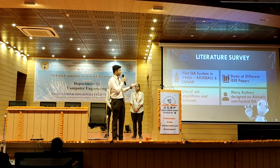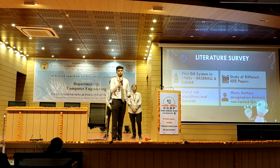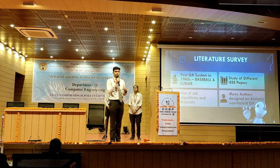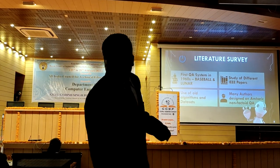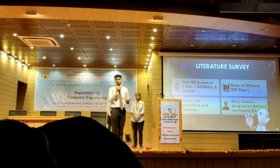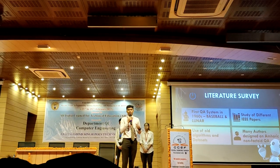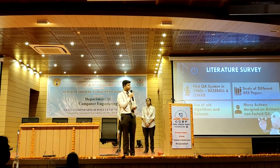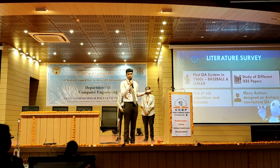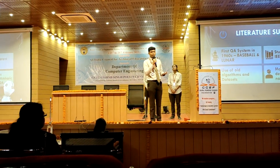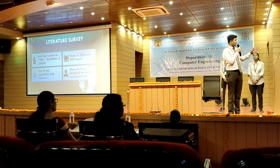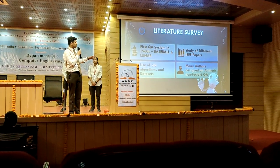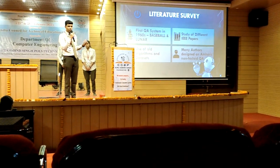Let me tell you about some early research in this field. The first QA system, Baseball, was developed in 1961 to answer questions related to baseball games played in the US — it was a closed domain QA. The second system, Lunar, was developed in 1971 to answer questions regarding the Apollo moon mission. Lunar helped geologists access, compare, and evaluate datasets of chemical analysis of lunar rocks and soil. We also studied different research made in this field and explored several neural networking approaches. Many authors designed emphoric non-factorial QA using the dataset WikiQA, which is an older version dataset, and as these systems used old algorithms, their accuracy was low.